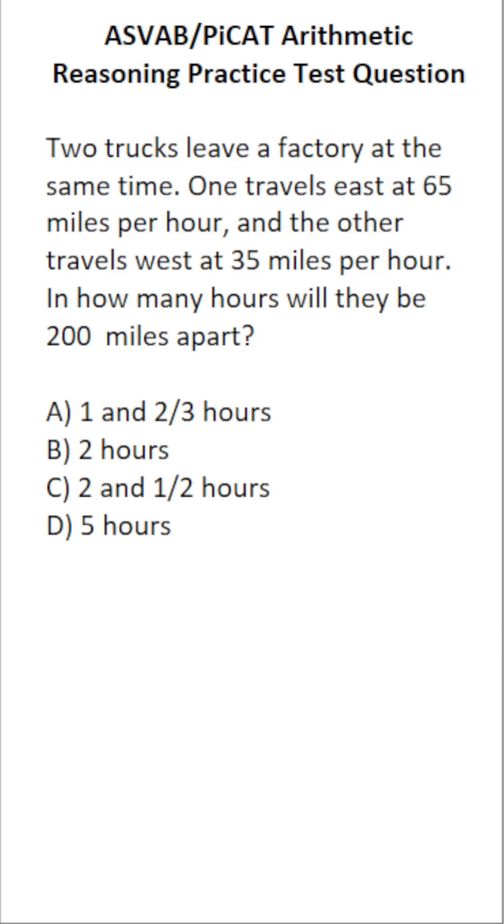This arithmetic reasoning practice test question for the ASVAB and PICAT says two trucks leave a factory at the same time. One travels east at 65 miles per hour, and the other travels west at 35 miles per hour. In how many hours will they be 200 miles apart?